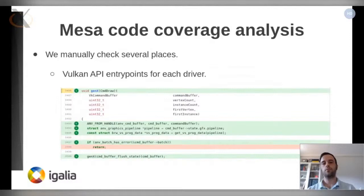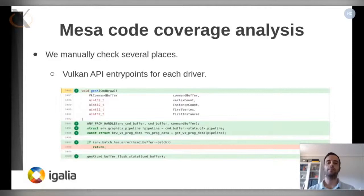Once we got the MESA code coverage results, it is time to analyze them. We currently do it by hand. In this talk, I will focus only on Vulkan drivers, but for OpenGL drivers the process will be very similar. For Vulkan API entry points, we check those that are provided by the drivers that we are analyzing. We check if all the arguments are used, for example, or if there is a missing case that can be easily spotted by checking the coverage of the source code.